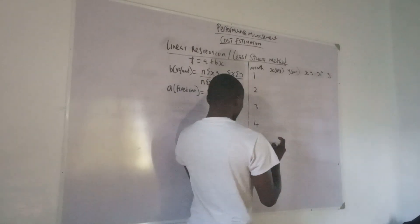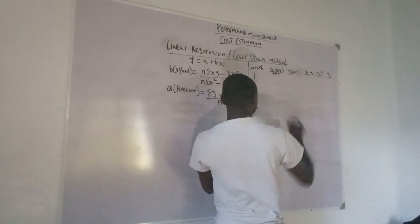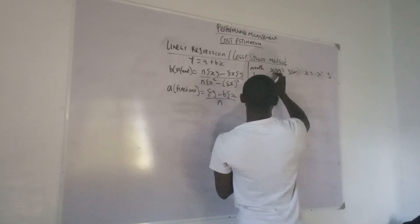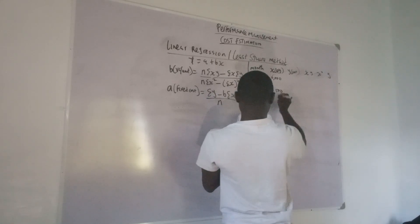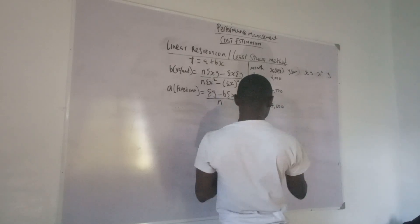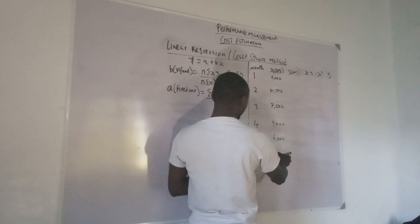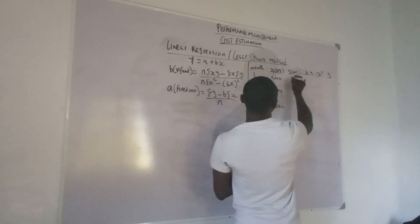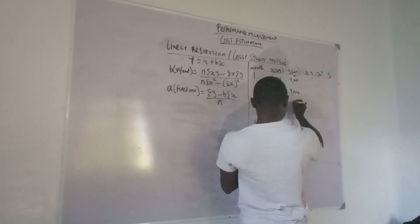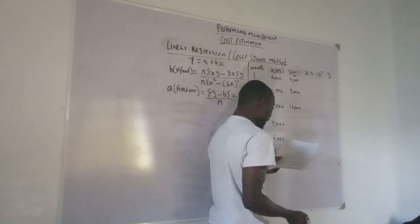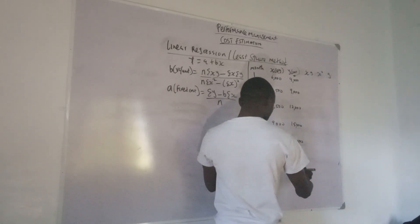Now filling in the values: x (quantity produced) is 6,000; 4,500; 7,500; 9,000; 6,000; and 3,000. The y values (repair costs) are 9,000; 9,000; 12,000; 15,000; 10,500; and 7,500. This method can actually take time, but we have to know it.